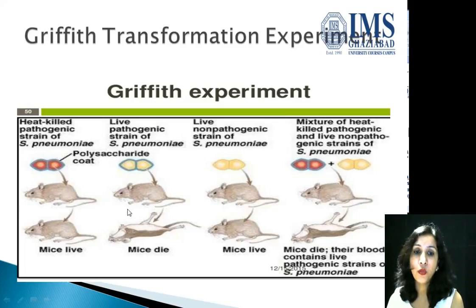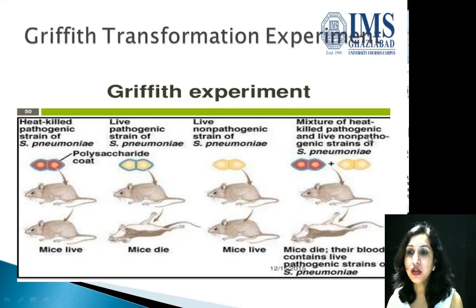When the live pathogenic strain was transferred, the mice died. When the live non-pathogenic strain was transferred, the mice survived again. But when the mixture of heat-killed pathogenic and live non-pathogenic strains was transferred, the mice died and their blood contained live pathogenic strains of S. pneumoniae.